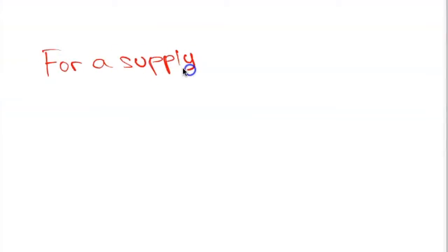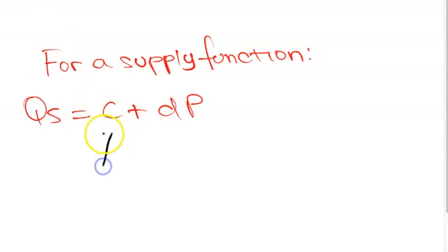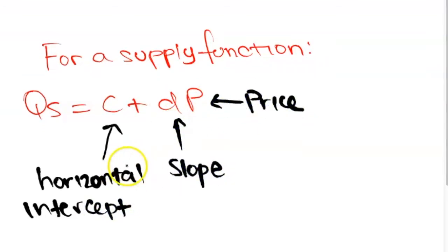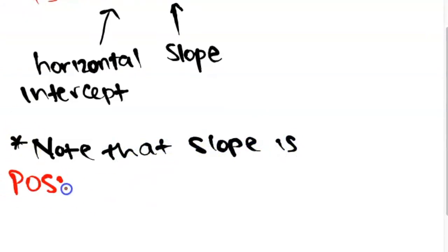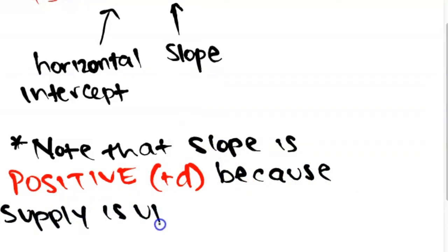Now let's move on to the supply function. The supply function can be written as quantity supplied equals c plus dp, where c is the horizontal intercept, d is the slope, and p is price. Note that unlike the quantity demanded function, the slope is positive, because the supply function is upward sloping.